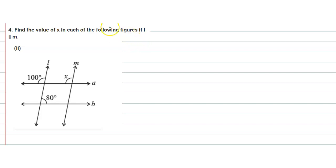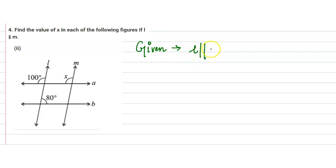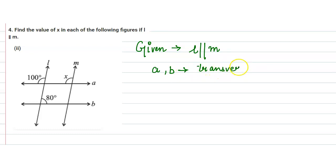Hello students, the given question is: find the value of x in each of the following figures if l is parallel to m. It is given that line l is parallel to m, and a and b are transversals for lines l and m. We need to find the value of x.